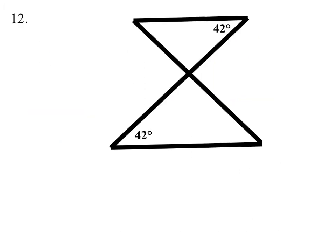Number 12: the interesting thing is that this angle has to be congruent to this one because they're vertical. Therefore, since we have two pairs of corresponding angles that are congruent, the third one must also be congruent — so these triangles are yes, similar.